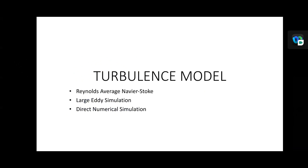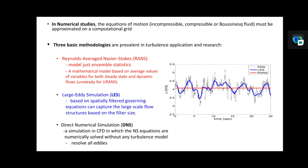Good evening everyone. Today I will talk about three basic methodologies prevalent in turbulence applications. The first is Reynolds-Averaged Navier-Stokes, or RANS. RANS is a mathematical model based on average values of variables for both statistical and dynamic flow — the model assembles statistics only.